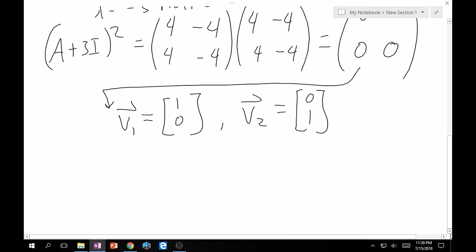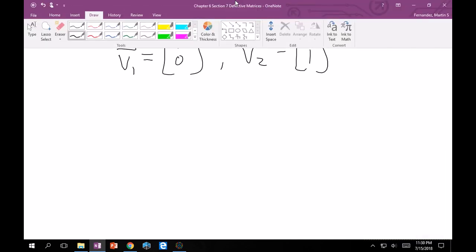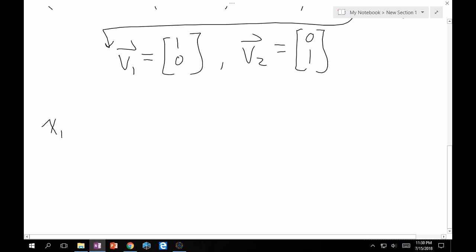Right? Okay. So, from there, we just apply the theorem. Our x1, therefore, is going to be e to lambda t, so e minus 3t, times our vk, which is 1, 0, and then plus t times a minus lambda i which was again this 4 minus 4 4 minus 4 times again our vk 1, 0.